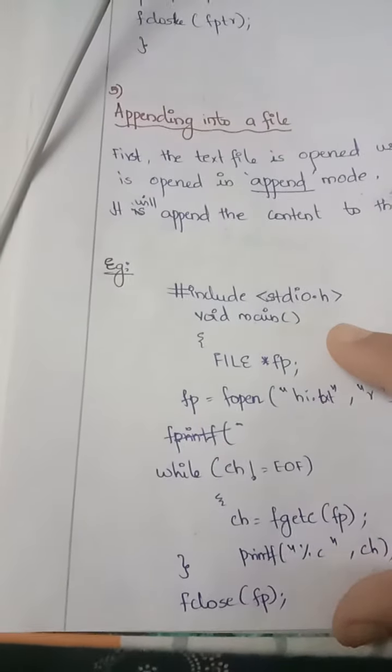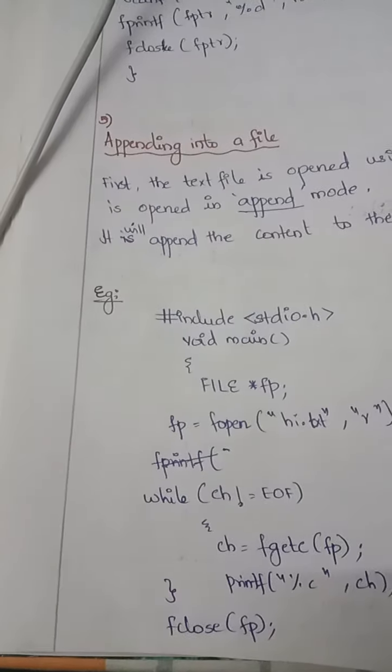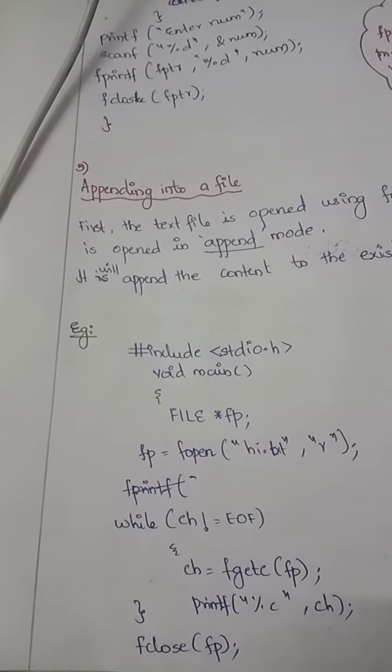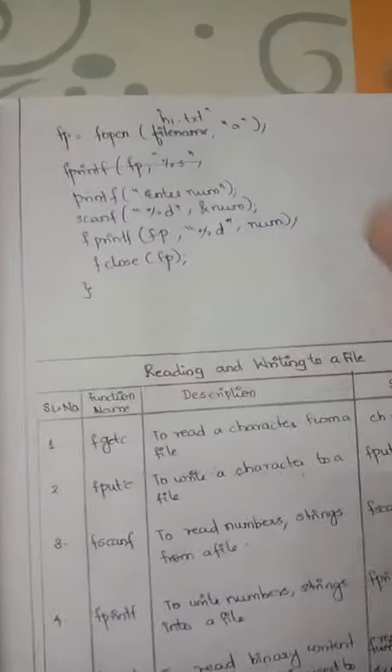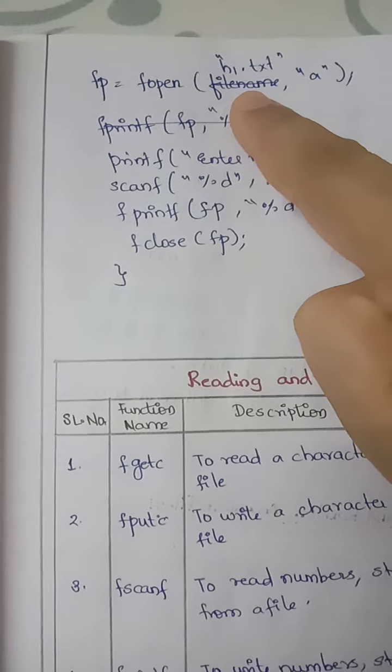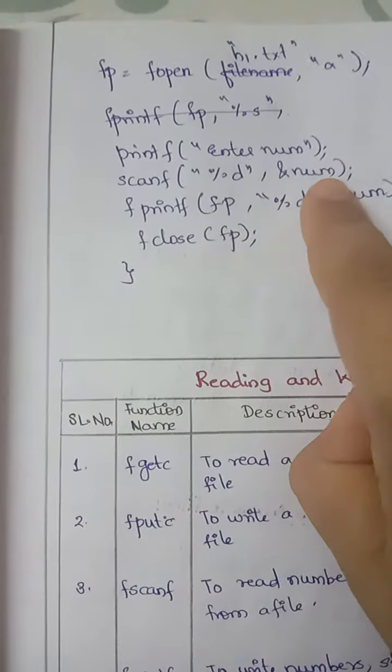So you have read it and closed it. Now we're going to do appending. We again open the same file (hi.txt) in append mode, and you are entering the number.